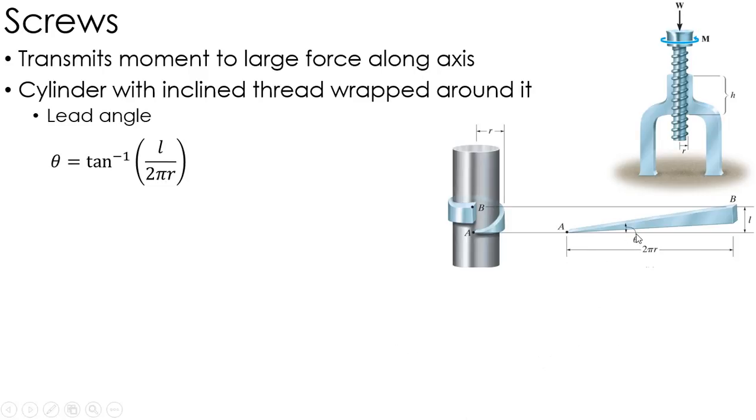So to find the angle of the ramp, I can simply take the inverse tangent of the lead divided by the circumference. So now I can draw my free body diagram. I treat it just like that ramp at an angle of theta.